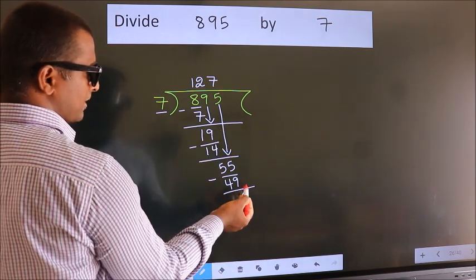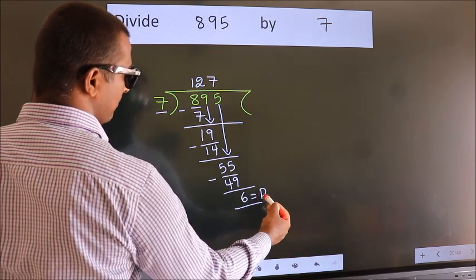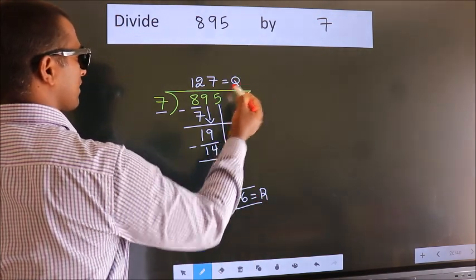No more numbers to bring it down. So we stop here. This is our remainder. This is our quotient.